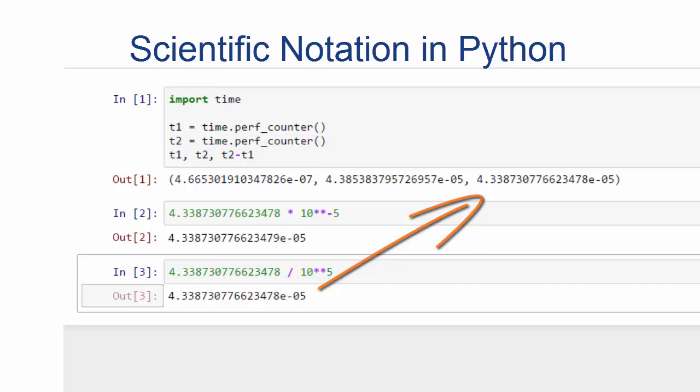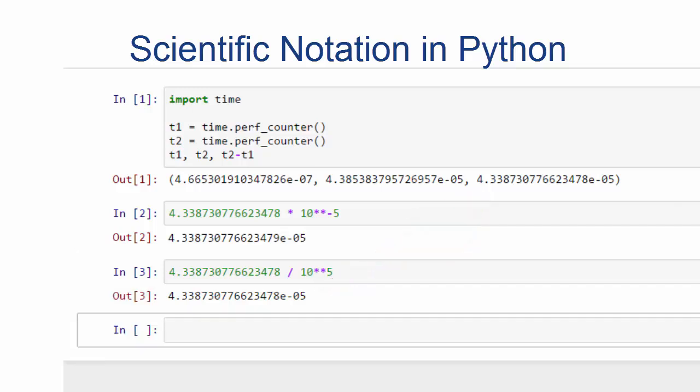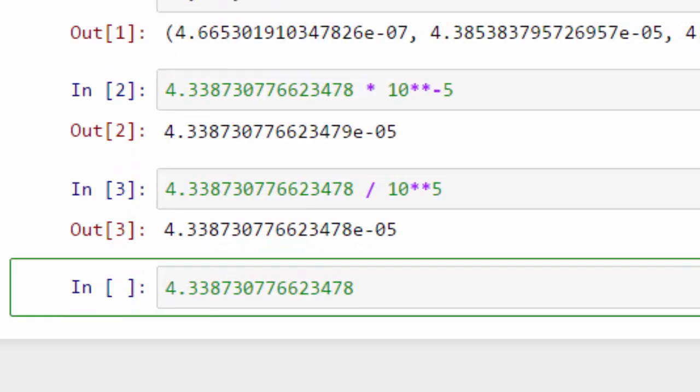So again, what does that actually mean? What's the number we're looking at? What it means is that we're moving the decimal point over to the left five times.